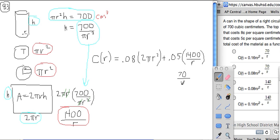So that's that part. Two times 0.08 is 0.16, so we have 0.16 times πr². And that is the cost in terms of r.